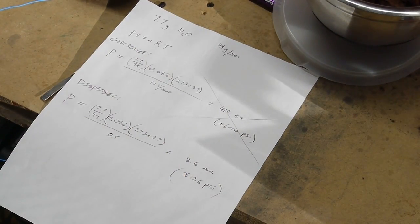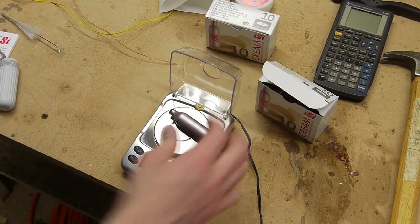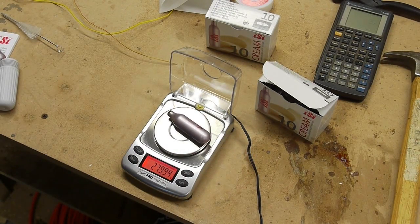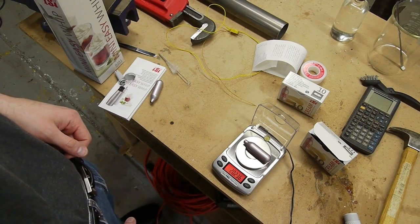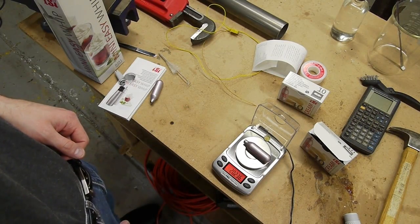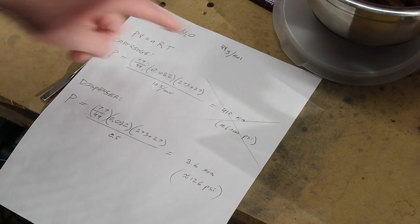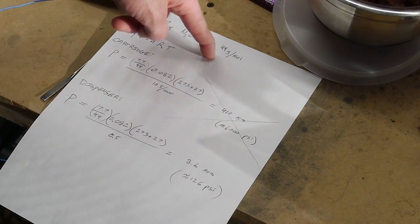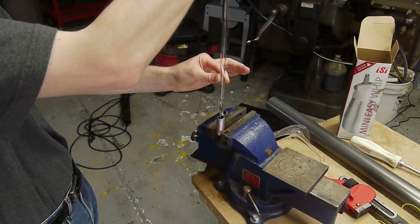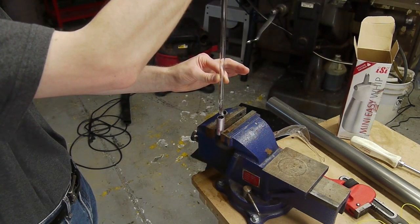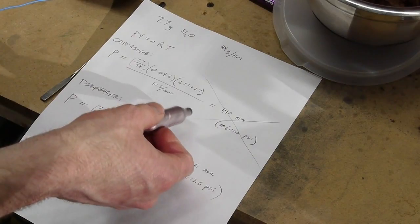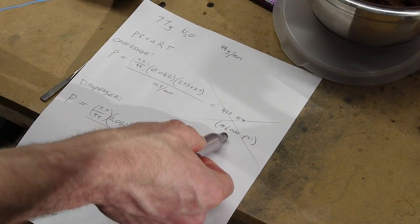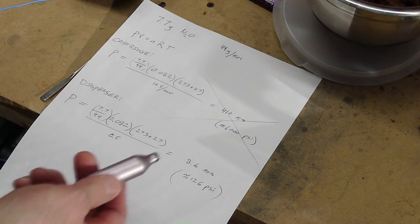So I started off by measuring the full cartridge and then discharged it into the mixing chamber and then weighed it again. And it looked like we had about 7.7 grams of gas that came out of here. And we know the molecular mass of nitrous oxide is 44 grams per mole. So I used PV equals NRT. And originally I wanted to find out what the pressure was inside one of these cartridges. So I went through the equation and came up with about 6000 psi, which is not correct.